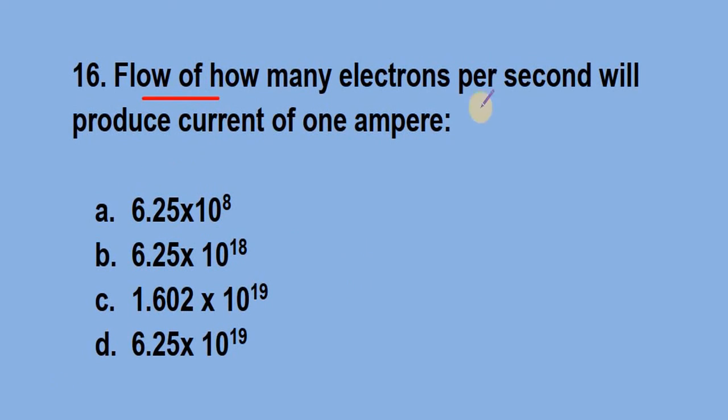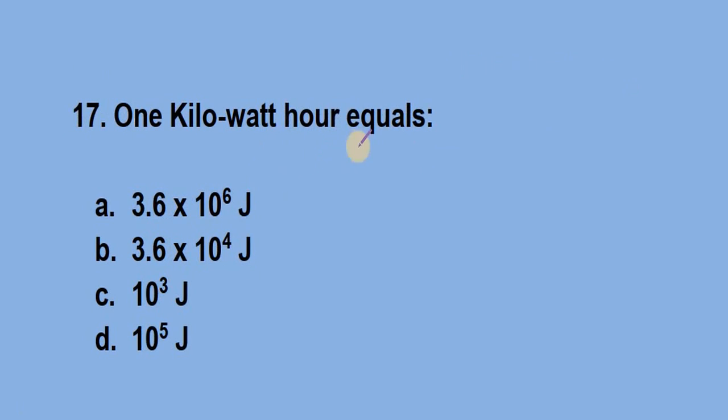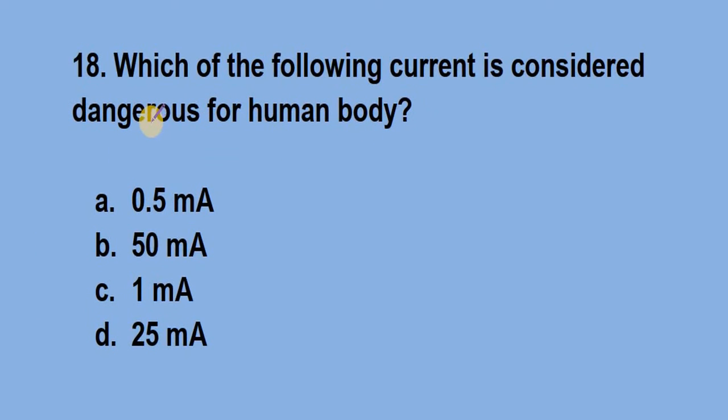Question number 16, flow of how many electrons per second will produce current of 1 ampere? Answer is option B, 6.25 into 10 raise to 18. Question number 17, 1 kilowatt hour equals? Answer is option A, 3.6 into 10 raise to 6 Joule. Question number 18, which of the following current is considered dangerous for human body? Answer is option B, 50 milli ampere.